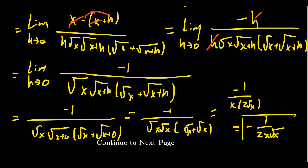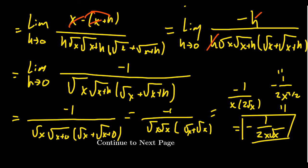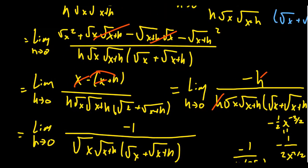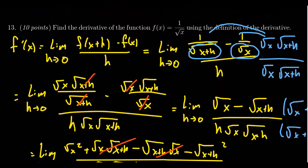That is the derivative of 1 over the square root of x, calculated using the definition of the derivative. By all means, if you know the power rule or the quotient rule, you might have also written the answer as negative 1 over 2 times x to the 3/2, or negative 1/2 times x to the negative 3/2. Those are all equivalent forms, and you can verify using the power rule.